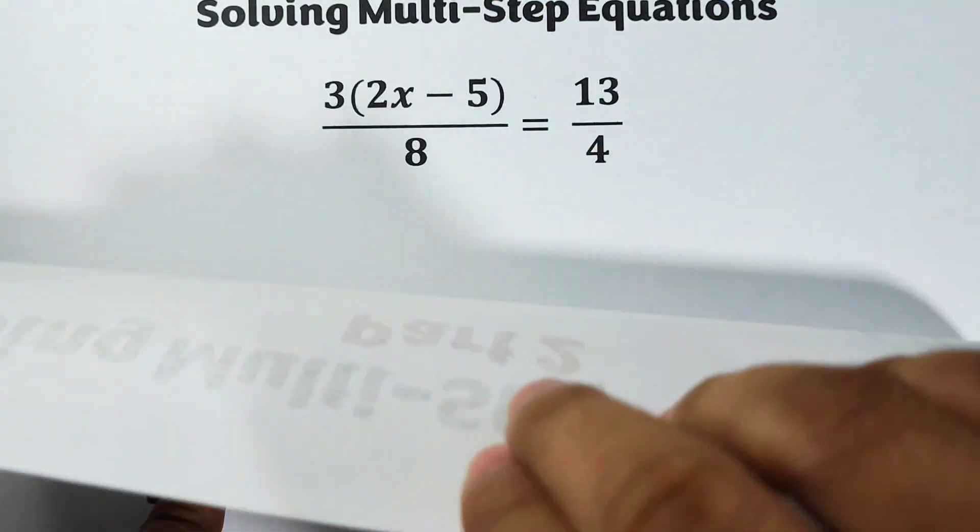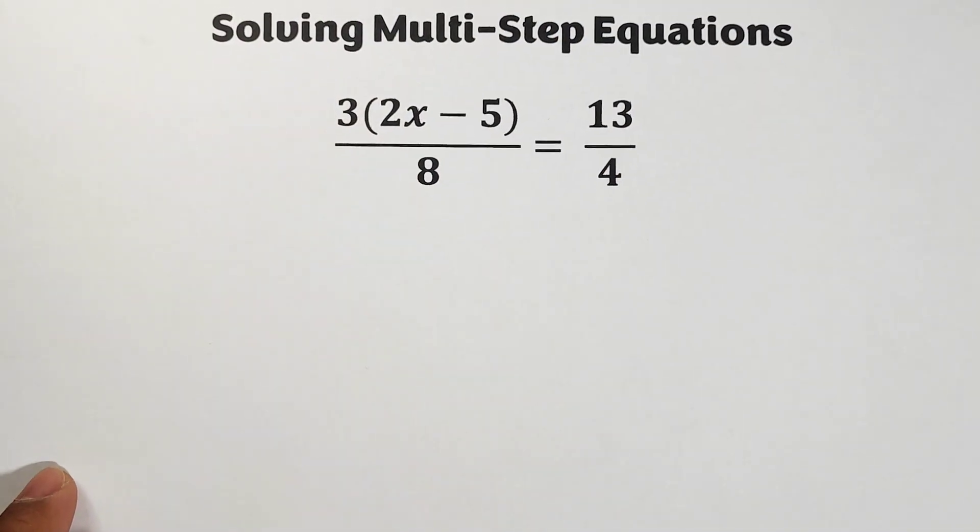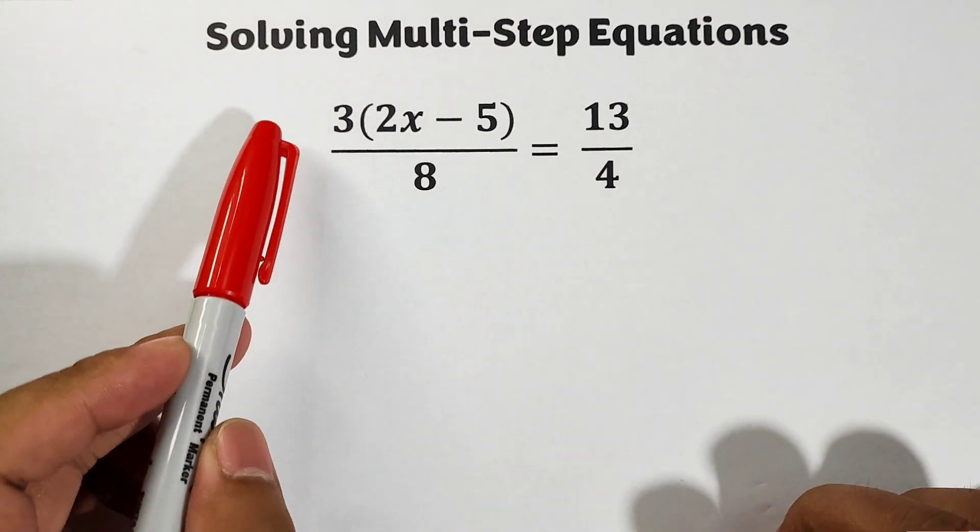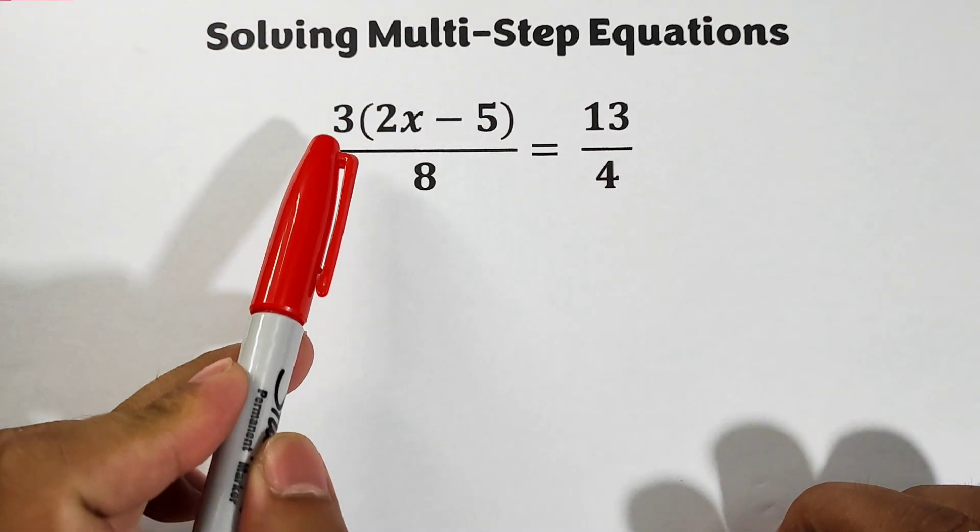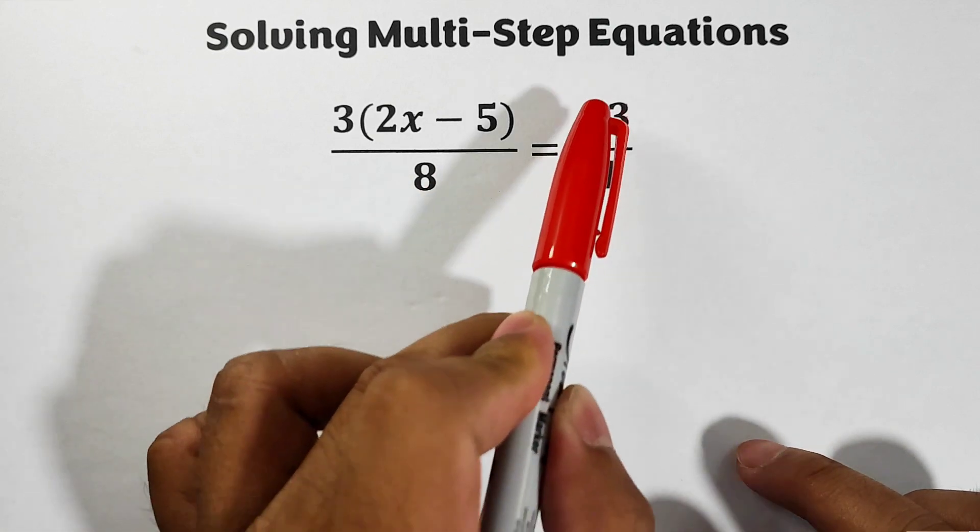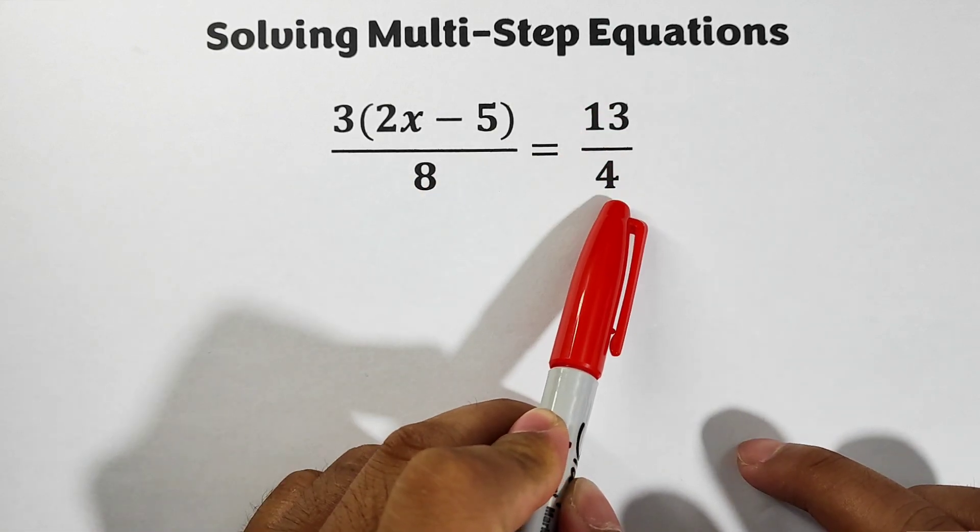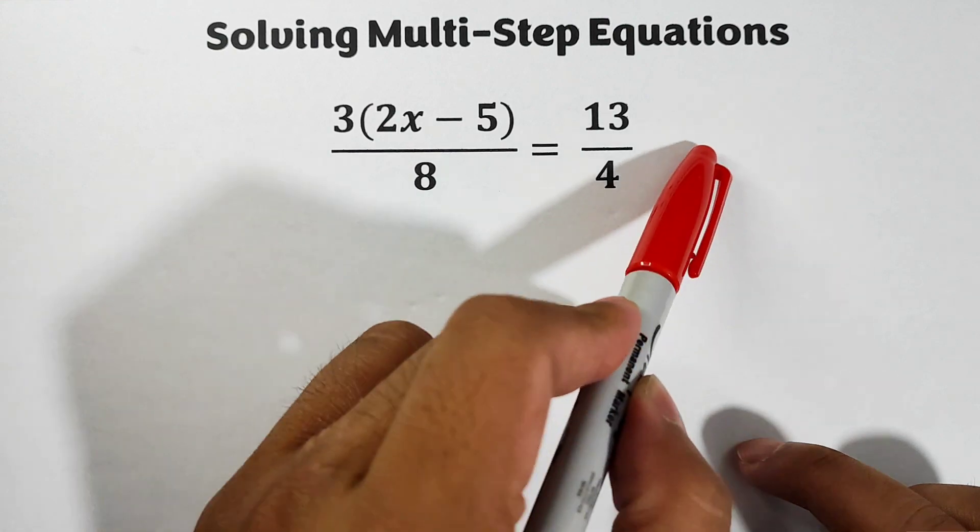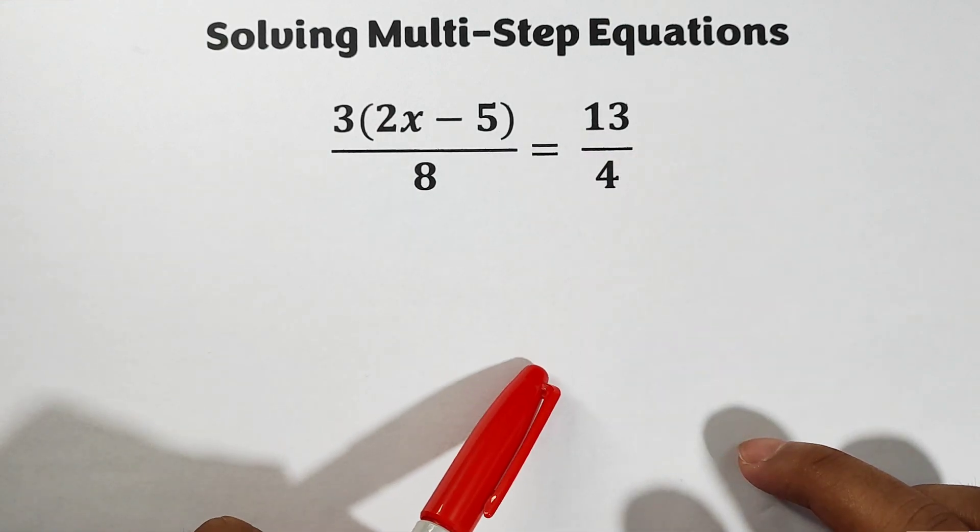Let's answer the first equation that we have. In this video we have solving multi-step equations: 3 times 2x minus 5 over 8 is equal to 13 over 4. So in this kind of equation we can either use cross multiplication or we can use multiplying it by the LCD.